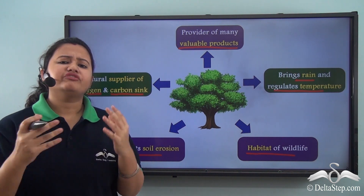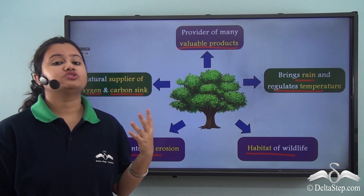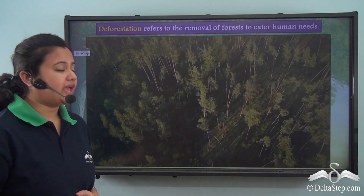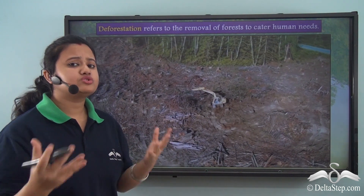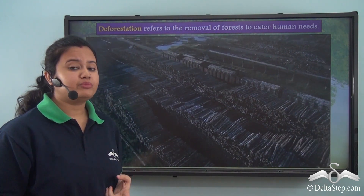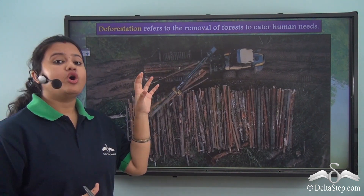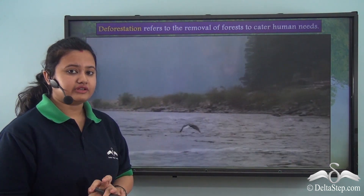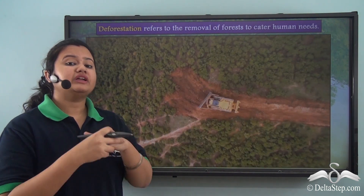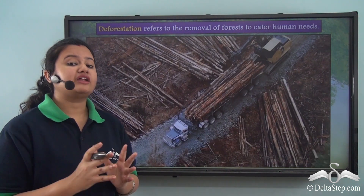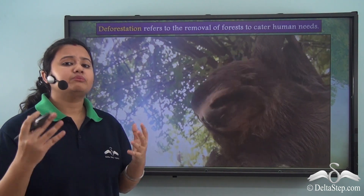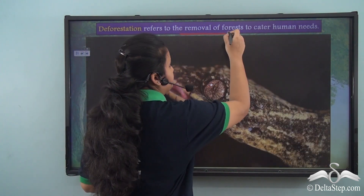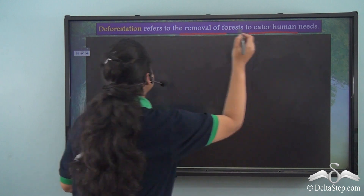Human beings are very selfish and instead of protecting plants we are destroying and harming them. Plants provide us with valuable products like timber, paper, fuel wood etc., and in order to satisfy growing needs for these items we are destroying forests. Forests are also being cleared to provide land for agriculture and for building infrastructure like roads, bridges, and buildings. This act of indiscriminate cutting down of trees and removal of forests to cater to human needs is known as deforestation.